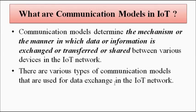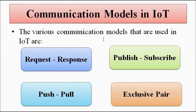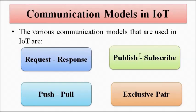Now, there are various types of communication models that are used for data sharing in the IoT network, but most commonly four types are used. These are: first, the request-response model; second, the publish-subscribe model; third, the push-pull model; and fourth, the exclusive pair model.